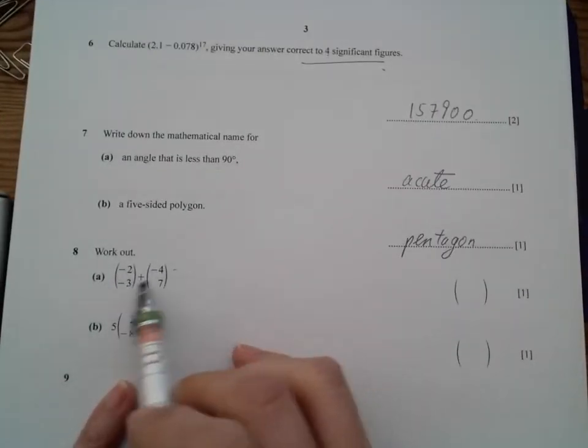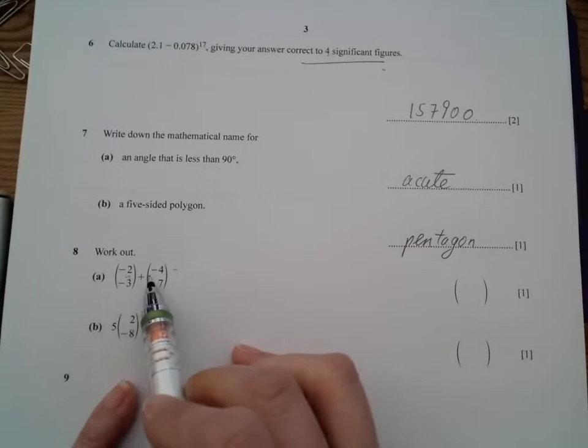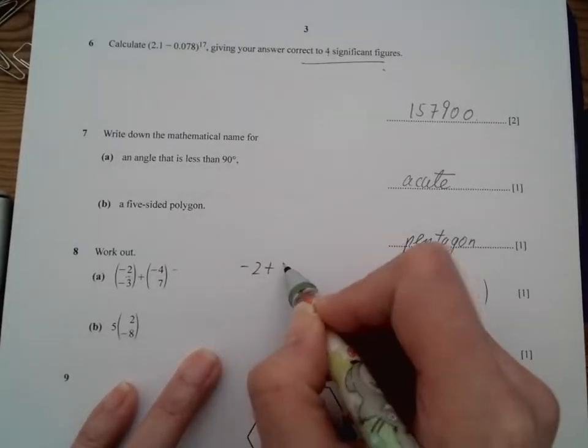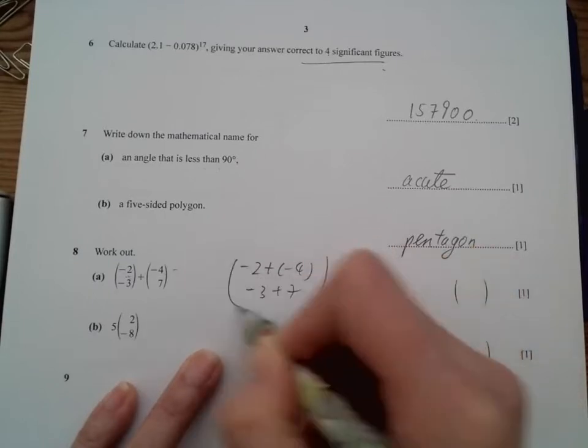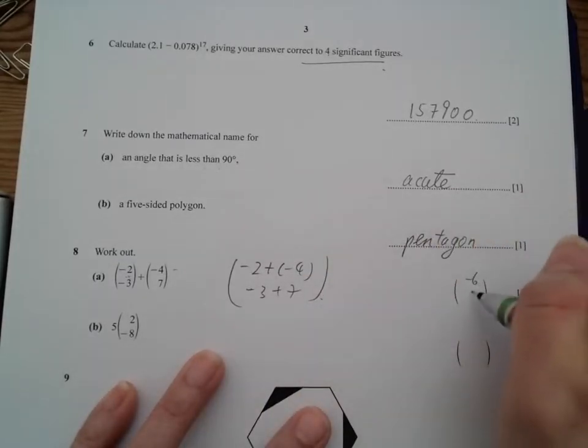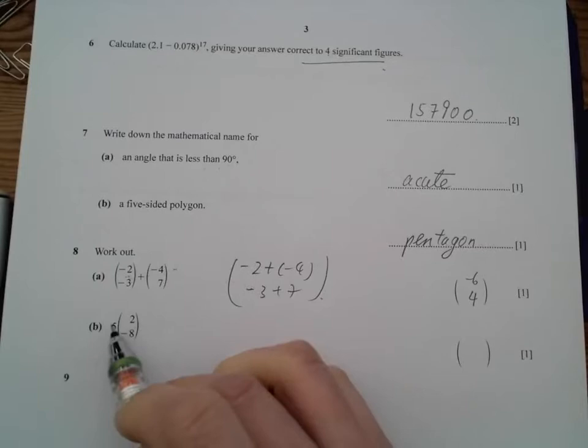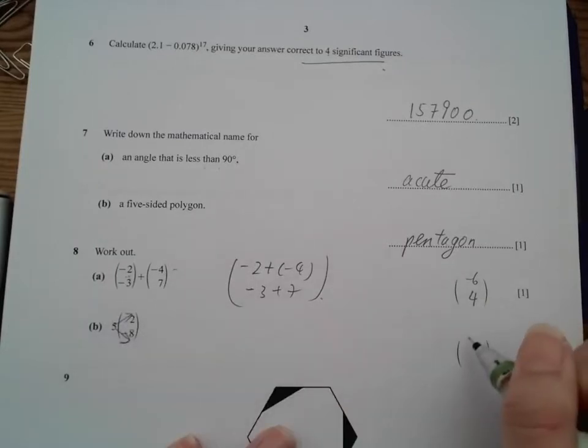All right, now this time, vectors. Adding vectors, we add to the right place. So negative 2 plus negative 4 and negative 3 plus 7. So then we have negative 6 and 4 as the answer. Multiply, we multiply both of them. So it's 10 and negative 40.